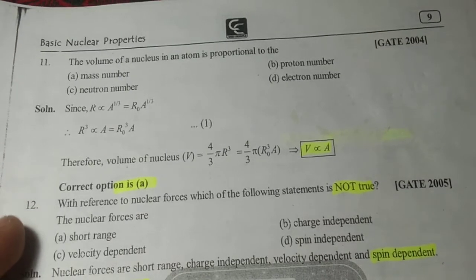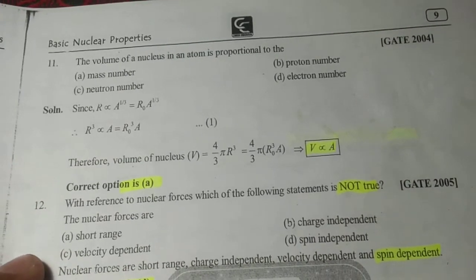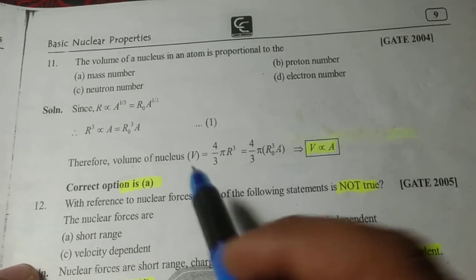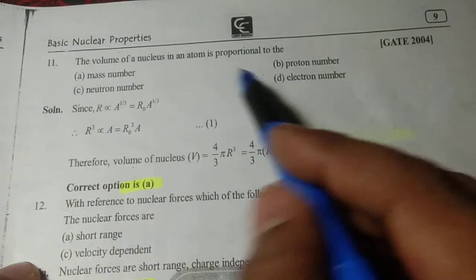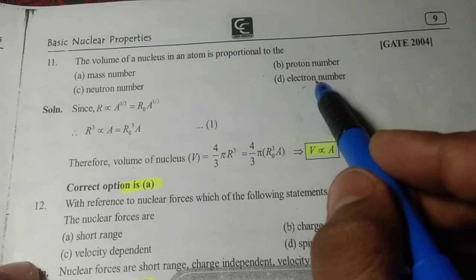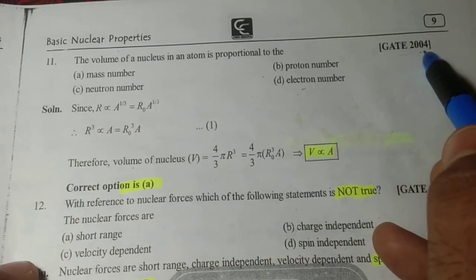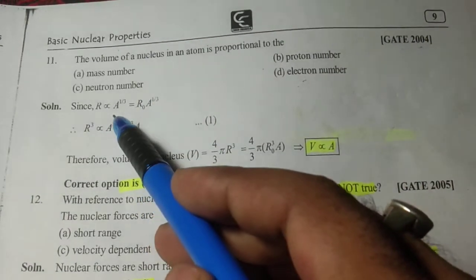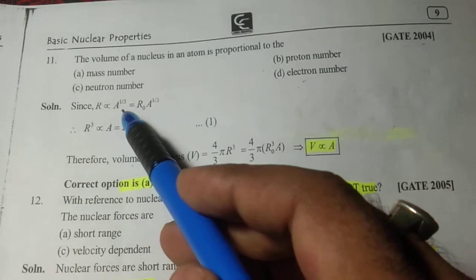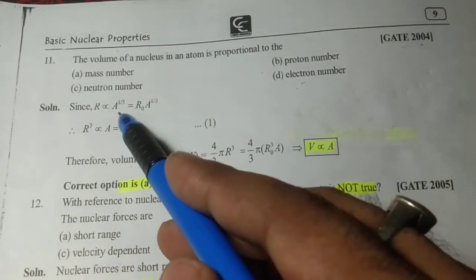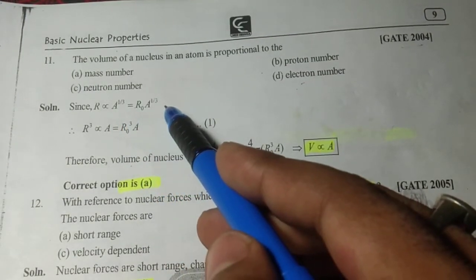Next question from GATE 2004: The volume of a nucleus in an atom is proportional to (a) mass number, (b) proton number, (c) neutron number, or (d) electron number. As we know, the radius is directly proportional to A^(1/3), where R = R₀A^(1/3).